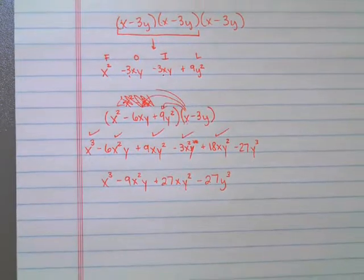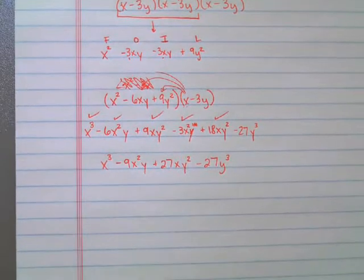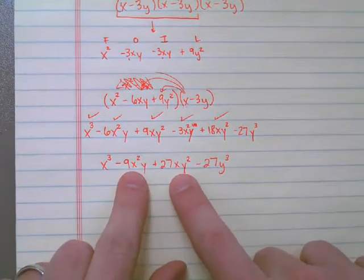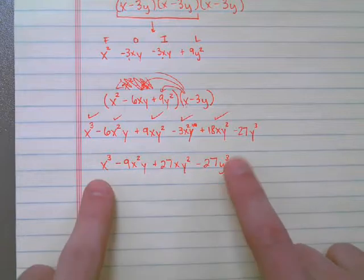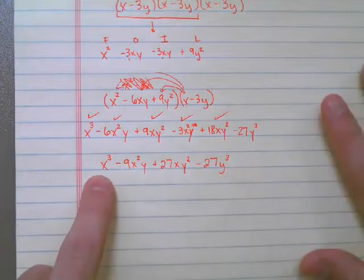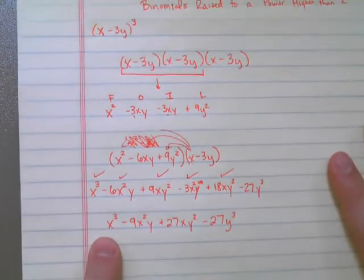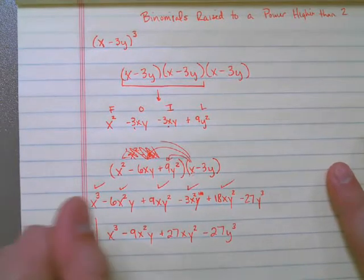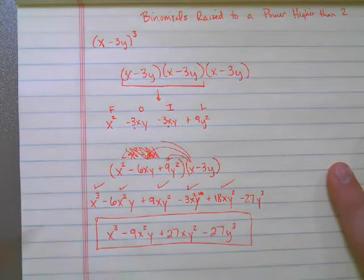Looking at this, it doesn't look like I have any more like terms that I can combine because x squared y is different than xy squared. So I can't add these two. y cubed, definitely different than the rest. x cubed, definitely different than the rest. So what I've done is I've completely expanded x minus 3y to the third. That means this here is my answer.